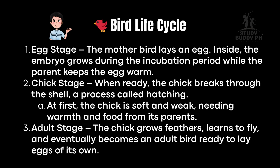Bird Life Cycle — Stage 1, Egg: The mother bird lays an egg. Inside, the embryo grows during the incubation period, while the parent keeps the egg warm. Stage 2, Chick: When ready, the chick breaks through the shell — a process called hatching. At first, the chick is soft and weak, needing warmth and food from its parents. Stage 3, Adult: The chick grows feathers, learns to fly, and eventually becomes an adult bird ready to lay eggs of its own.